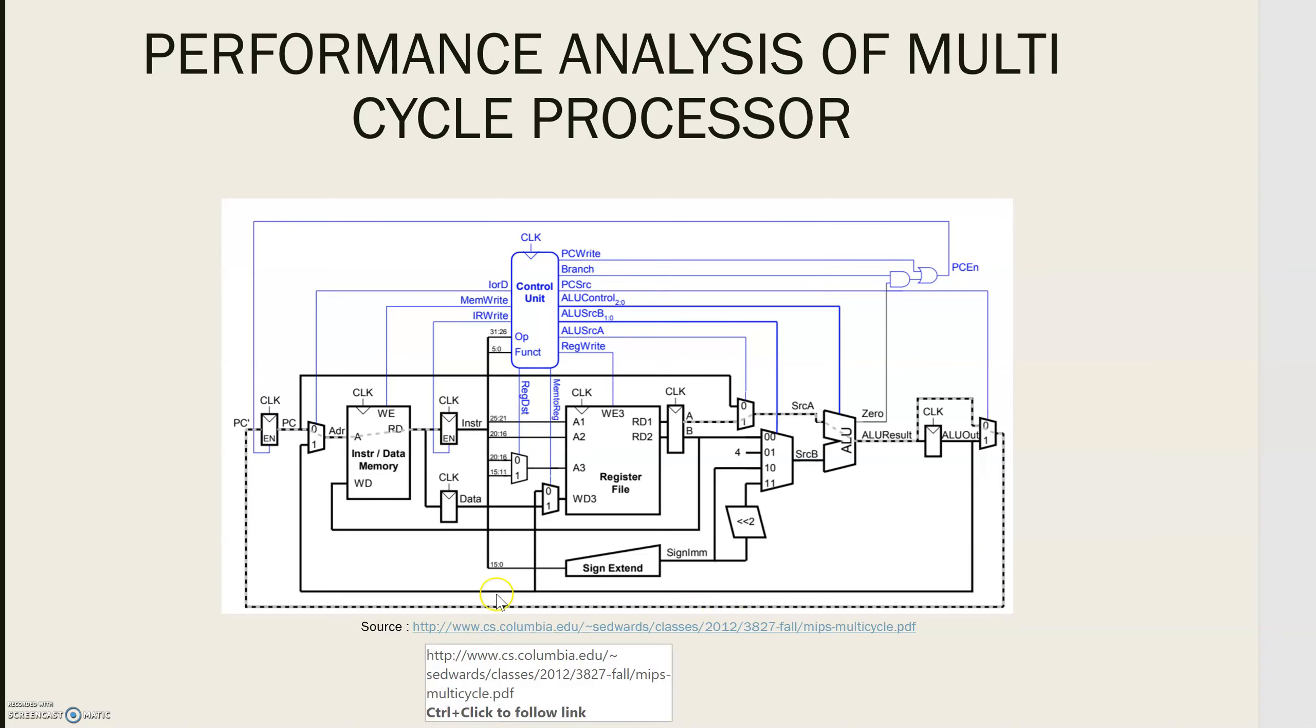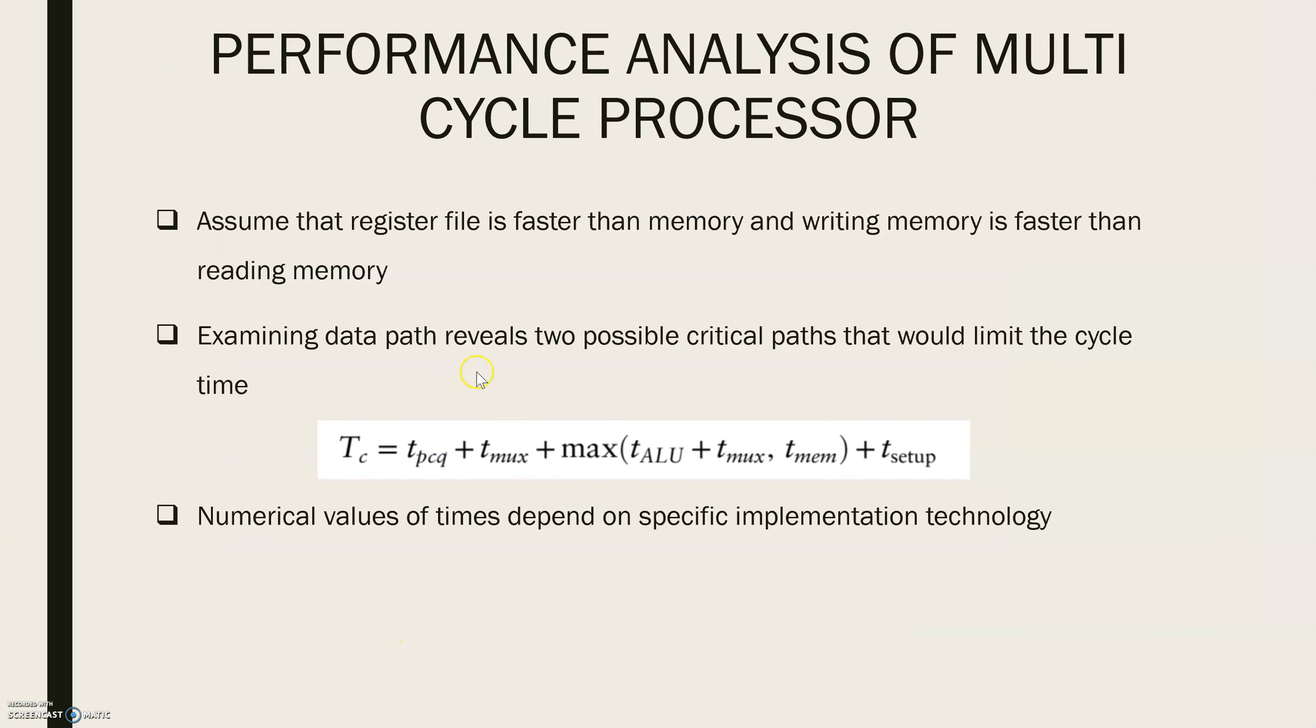On deducting the critical path here, we will end up having this equation for cycle time, which is given by propagation delay for clock to queue added to propagation delay in multiplexer, added with the maximum of either the propagation delay of ALU added to propagation delay of multiplexer or the propagation delay in memory, again added to the setup time. Also note that the numerical values of time here depend on specific implementation technology.